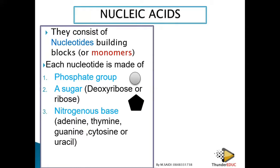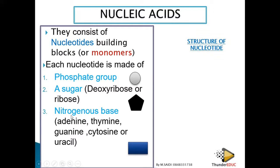The third component of a nucleotide is the nitrogenous base. There are five types: adenine, thymine, guanine, cytosine, and uracil. DNA has its specific nitrogenous bases and RNA has its own specific nitrogenous bases. We will look at which bases belong to DNA and which belong to RNA.